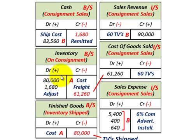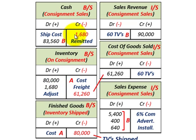The freight charge is included in our inventory account. We debit or increase our inventory on consignment by $1,680 for the freight, and then credit or reduce our cash account by $1,680 for that shipping cost.